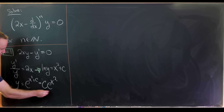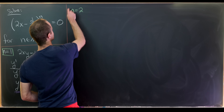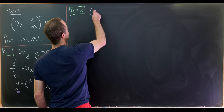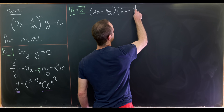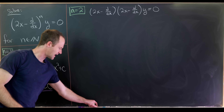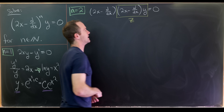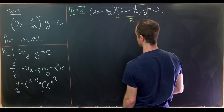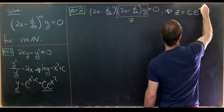So a constant times e to the x squared is the most general solution for the n equals 1 case. Now let's jump into the n equals 2 case. Here we're looking at (2x − d/dx)(2x − d/dx) acting on y equals 0. If we fuse the last two terms into a new variable z, then z is a solution to our n equals 1 differential equation.